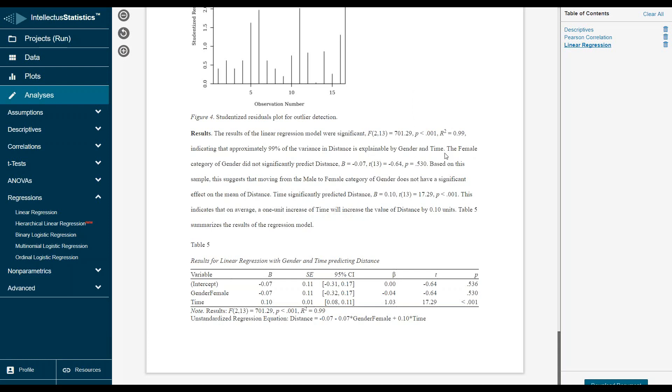The female category of gender did not significantly predict distance based on this sample, to suggest that moving from male to female category does not have a significant effect on the mean of distance. Time significantly did predict distance. This indicates on average, every time you increase time by one unit, and it was measured in minutes, it will increase the value of distance by 0.1 units, and that was measured in miles. And then here's your APA table.